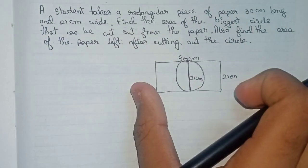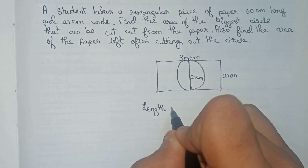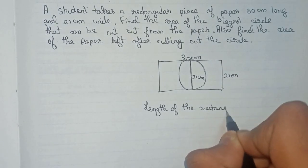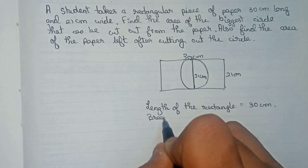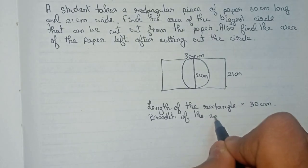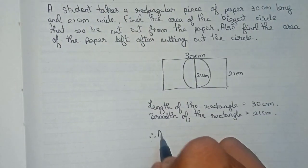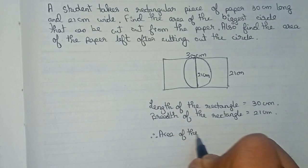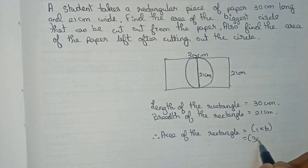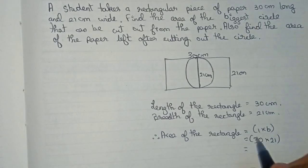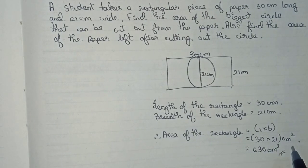So this will be our diagram. First, we will find the area of the rectangle. The information provided: length of the rectangle is equal to 30 centimeters, and breadth of the rectangle is 21 centimeters. So the area of the rectangle equals length × breadth = 30 × 21 = 630 centimeters squared.